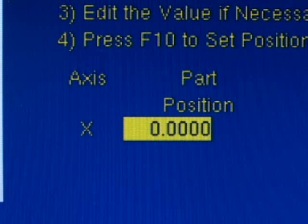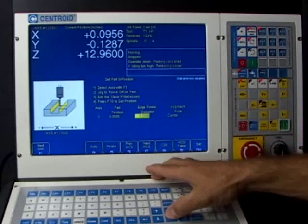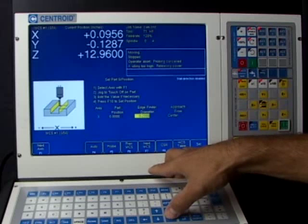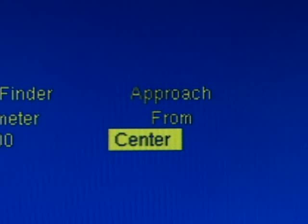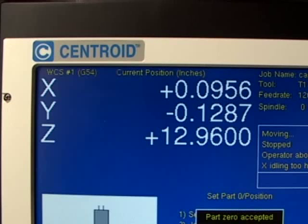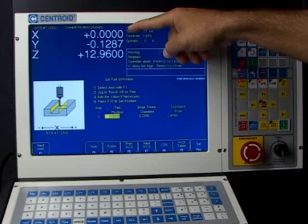Well, we did want it to be set to zero, so I'm going to leave the X zero part position set where it's at. The edge finder diameter doesn't matter since we're setting a center. I can just leave that alone. And I want to make sure that I have the approach from set to center. And when I hit the F10 set button right now, it's going to zero out the X axis.